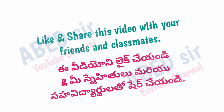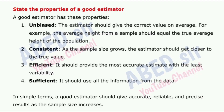Next important short question: State the properties of a good estimator. A good estimator has these properties. 1. Unbiased: the estimator should give the correct value on average — for example, the average height from a sample should equal the true average height of the population. 2. Consistent: as the sample size grows, the estimator should get closer to the true value. 3. Efficient: it should provide the most accurate estimate with the least variability. 4. Sufficient: it should use all the information from the data. In simple terms, a good estimator should give accurate, reliable, and precise results as the sample size increases.